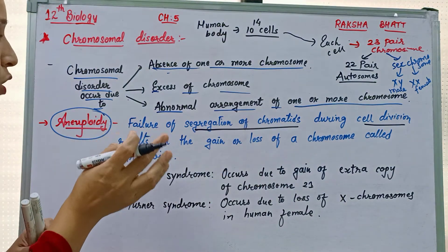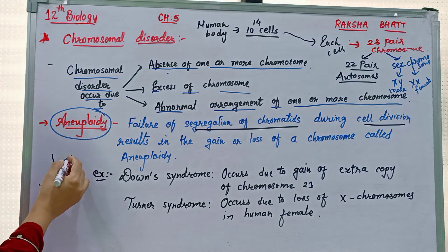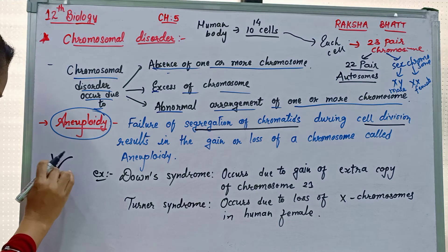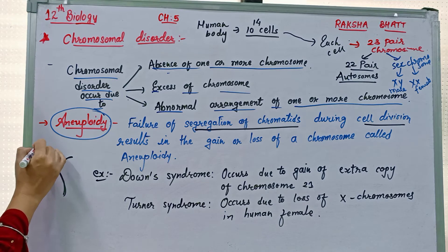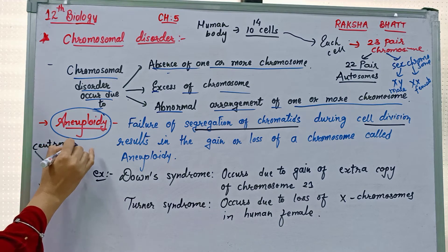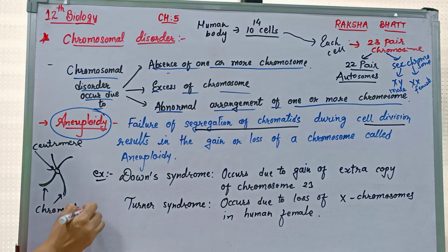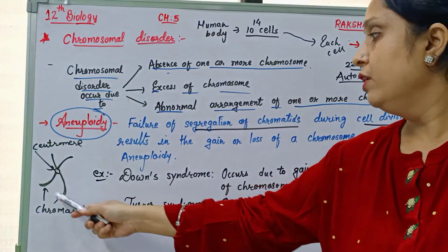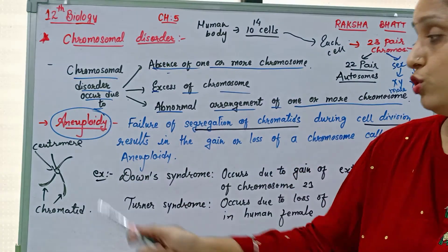A chromosome is made up of two chromatids — the first chromatid and the second chromatid — held together by a centromere in the middle. This is the structure of a chromosome: two chromatids held together by a centromere.